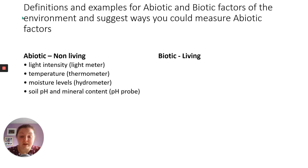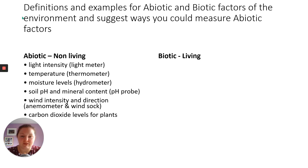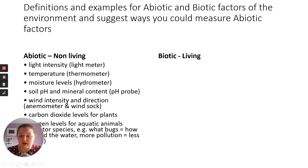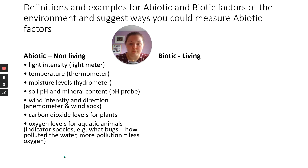pH and mineral content — you can use a pH probe, the little red thing to measure pH that you've used in chemistry. Wind intensity and direction: an anemometer and a windsock — you might get away with 'wind meter' in a panic. Carbon dioxide level of plants is difficult to measure; I've never seen that asked before. Oxygen levels for aquatic animals — interestingly, you measure oxygen levels by what bugs are in the water. Some species need really clean water with lots of oxygen; some species can only live in very badly polluted water with very low levels of oxygen. So you can measure oxygen levels by the bug species present in the water.